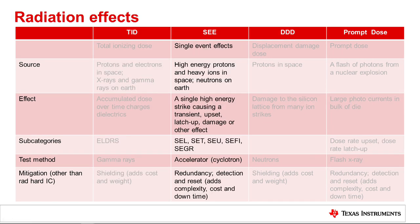Single event effects are caused by high-energy protons or heavy ions in space; on Earth, the concern is with neutrons. A single event effect is a one-time event caused by a high-energy particle striking a circuit, resulting in an event such as a transient, an upset, a latch-up, or damage. Testing is done with an accelerator. High-energy heavy ions and protons typically cannot be shielded in space, so mitigation involves adding extra circuitry such as redundancy or a detection and reset circuit, which adds complexity, cost, and downtime.